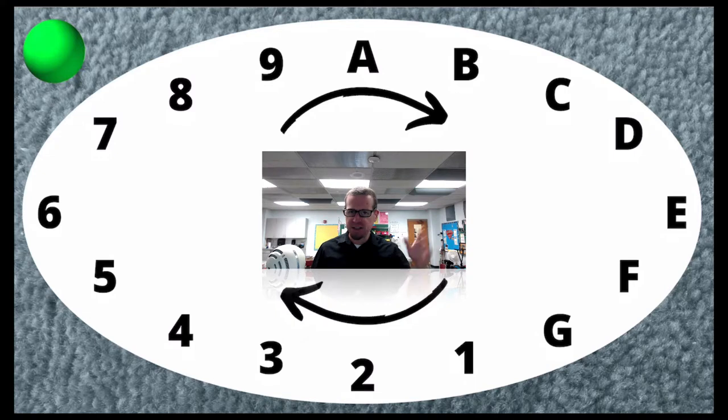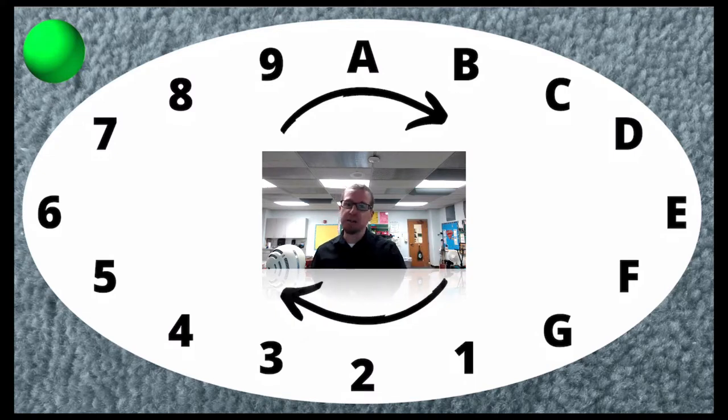There's no H, I, J — none of that. Just A, B, C, D, E, F, G. Then numbers: 1, 2, 3, 4, 5, 6, 7, 8, 9.